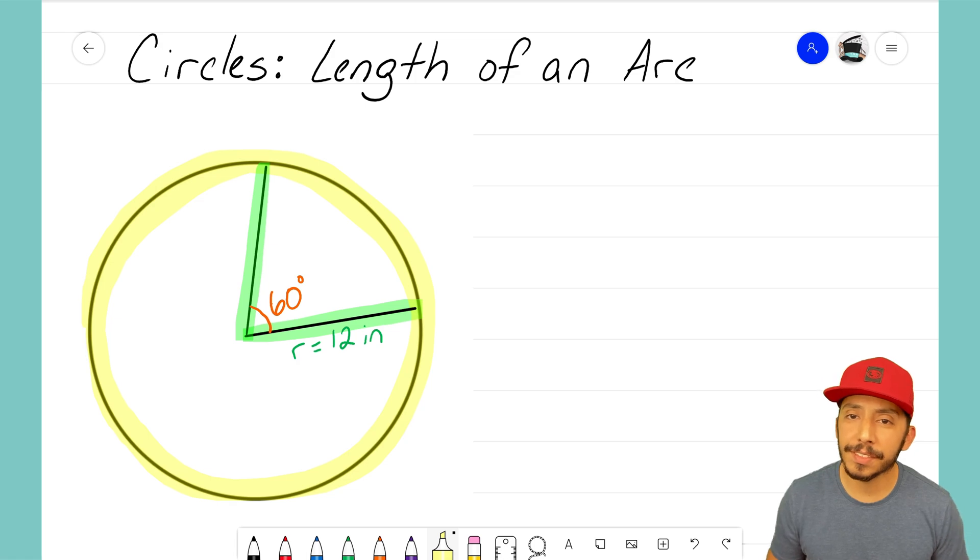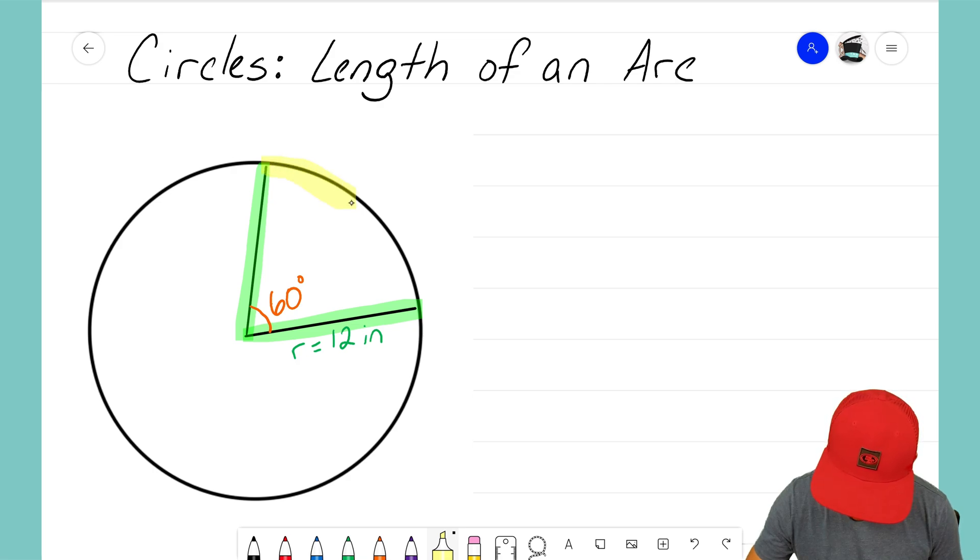But we're not interested in finding the total circumference. For us, we're interested in finding the portion of the sector's circumference. Really, I'm talking about this portion right here, and that's what we refer to as an arc. We want to find the length of that arc.